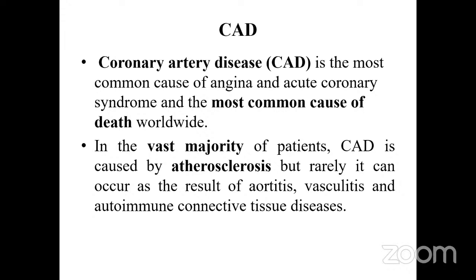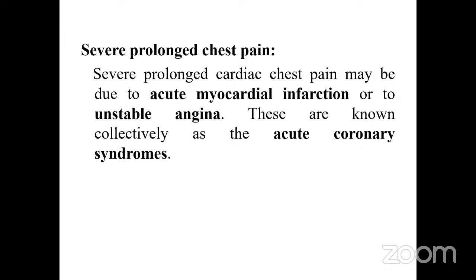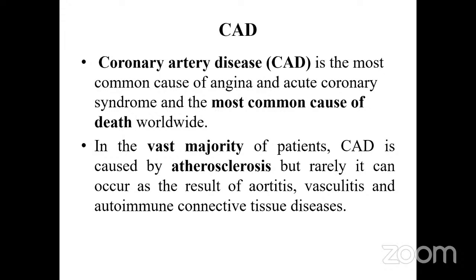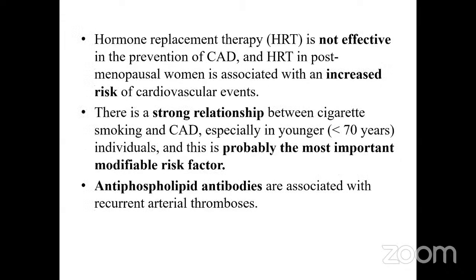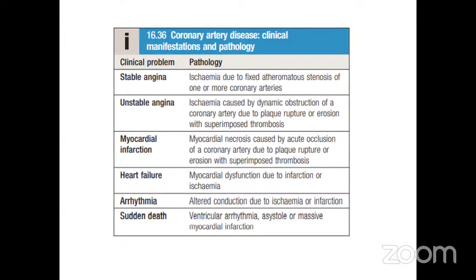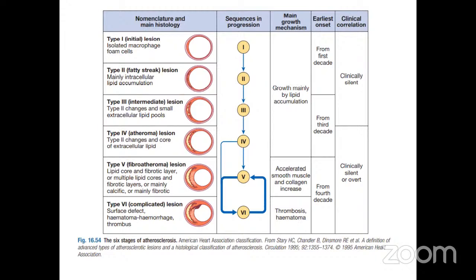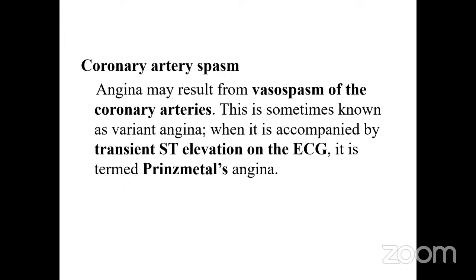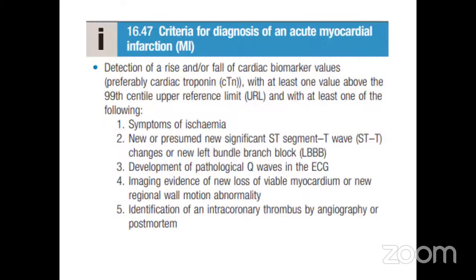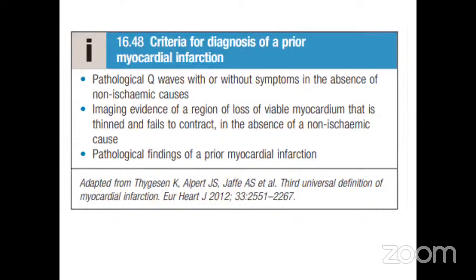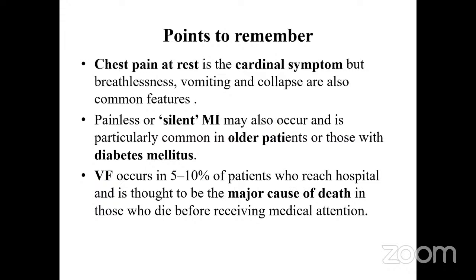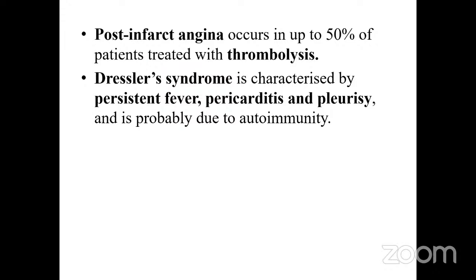Regarding coronary artery disease: acute coronary syndromes include acute MI and unstable angina; atherosclerosis is the most common cause of CAD; atherosclerosis has six stages — first four with lipid, type 5 with fibrosis, type 6 complicated with hematoma. Coronary artery spasm leads to Prinzmetal's angina. Canadian Cardiovascular Society angina classification has four classes. Criteria for acute MI: ST-T changes, pathological Q waves, J-point. Silent MI, ventricular fibrillation, post-infarct angina, and Dressler syndrome are key points.